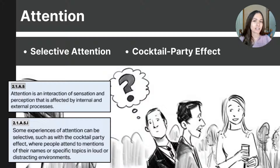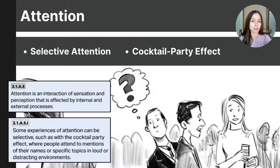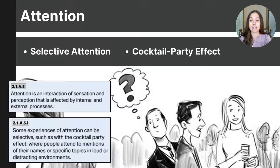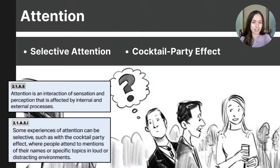By now, you've probably realized that we may perceive things differently than they actually are, and that external and internal factors influence how we interpret sensory information. Another factor that can influence our perception is attention — our mind's focus, or what we attend our thoughts to. By one estimate, our five senses take in 11 million bits of information per second, yet we can only consciously process about 40 bits of that. So what captures our limited attention? Simply, things that our brain deems important. This is what we call selective attention.